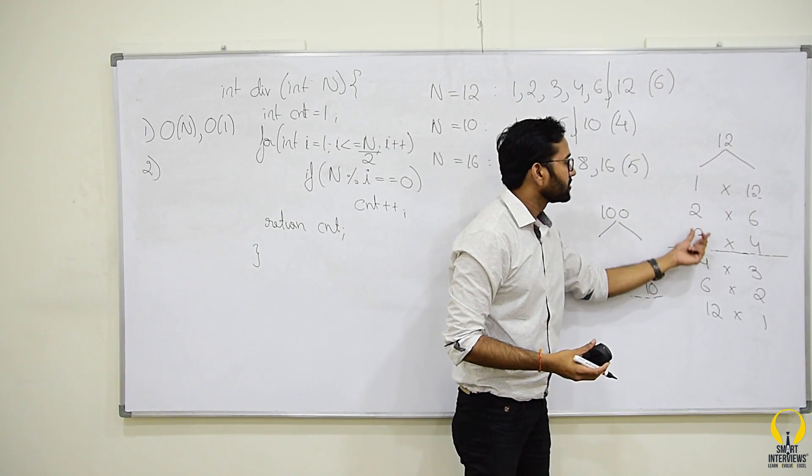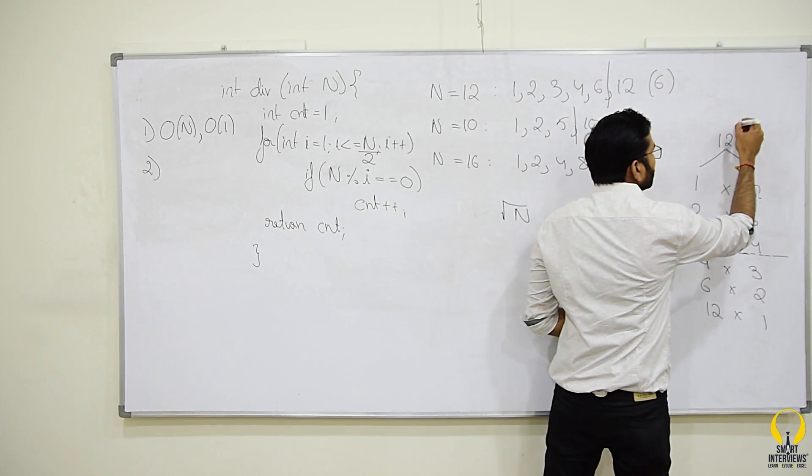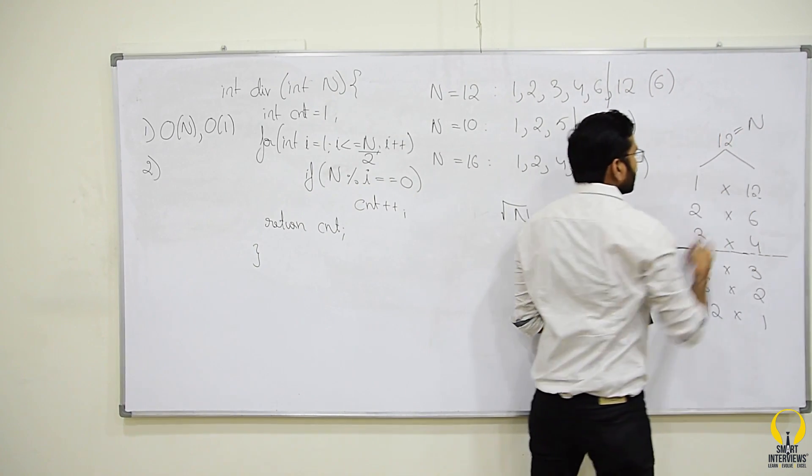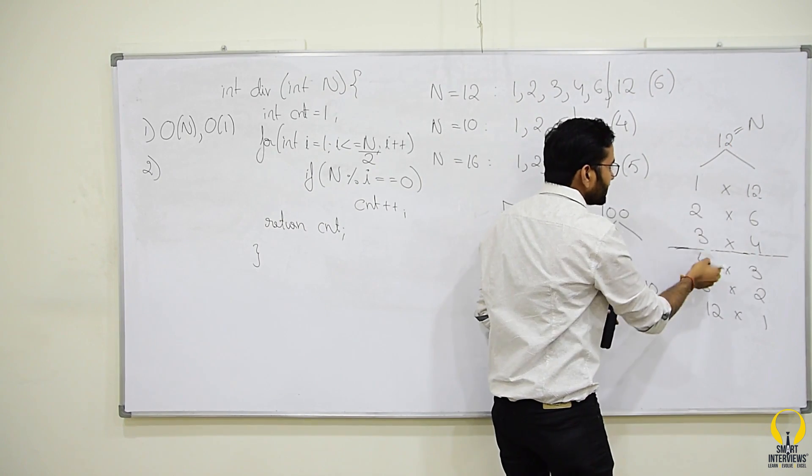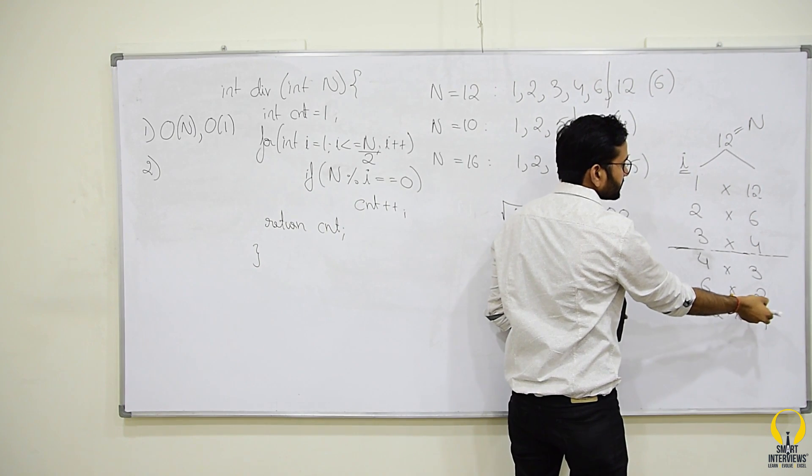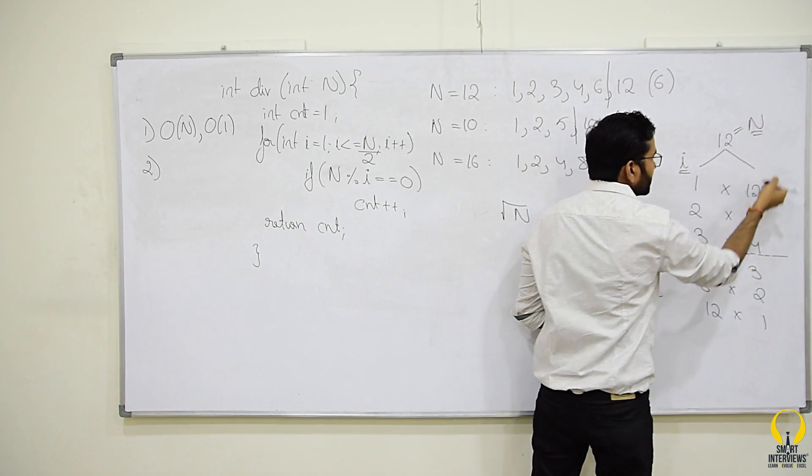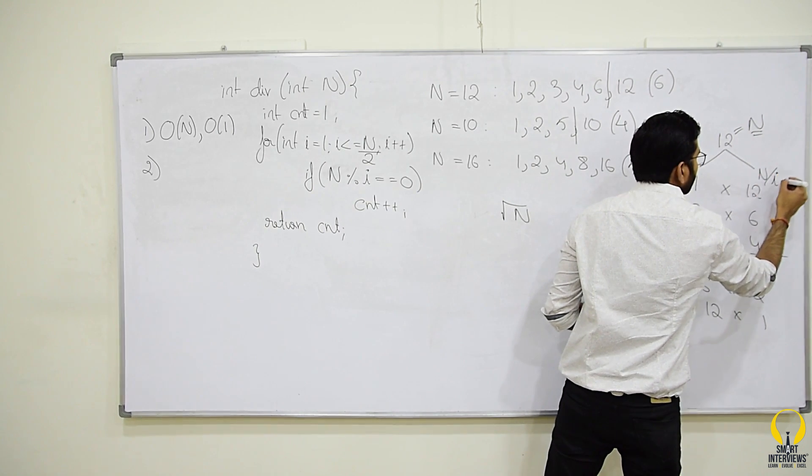So, if i reaches square root of n, we should not go beyond that. Another way to understand this limit can be, if this is n and I am calling this as i, what is this with respect to n and i is nothing but n/i.